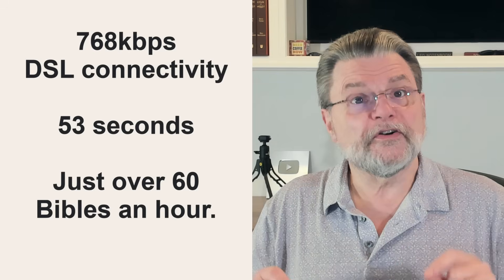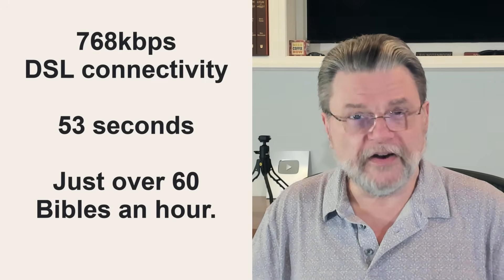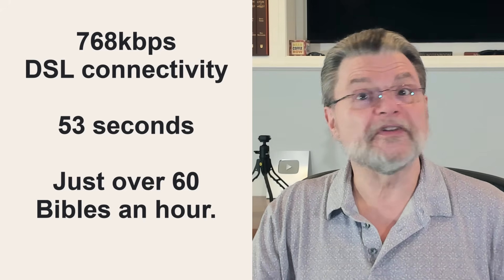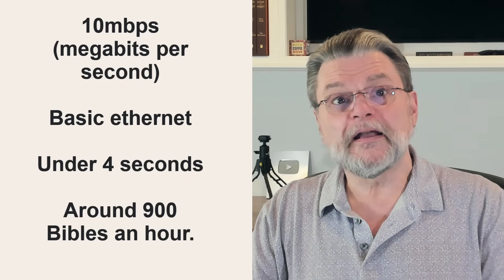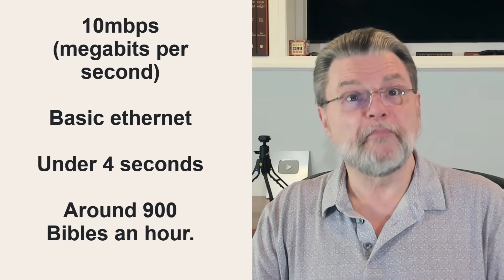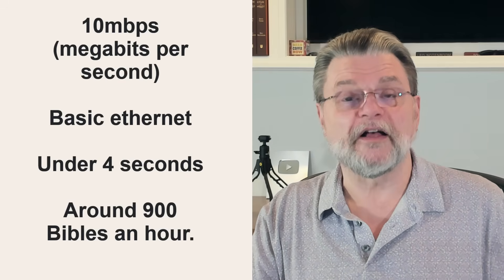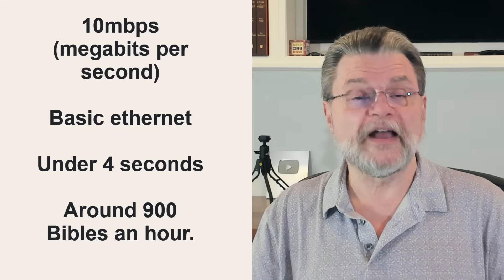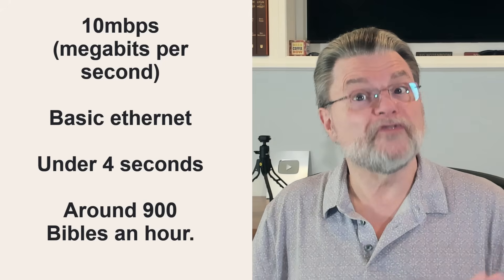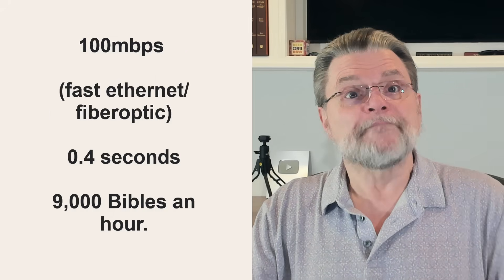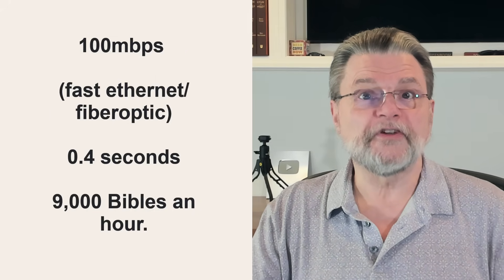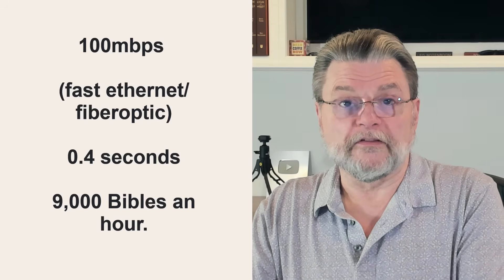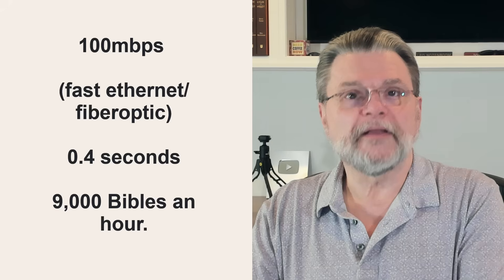At 768 kilobits per second, which is very basic DSL, that's 53 seconds, or just over 60 Bibles in an hour. At 10 megabits per second — the speed of basic Ethernet, fast DSL, or a common cellular modem speed — just under four seconds for one Bible, so around 900 in an hour. At 100 megabits per second — fast Ethernet and a common fiber optic into-the-home speed — 0.4 seconds, or 9,000 Bibles in an hour.